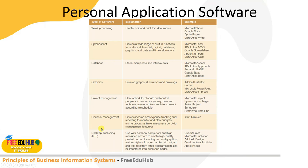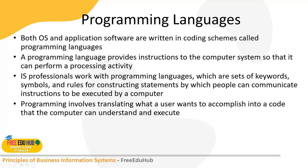Both operating system and application software are written in coding schemes called programming languages. A programming language is used to develop programs — you might develop applications in Visual Basic, ASP.NET, or PHP, depending on the organization and business motive. A programming language provides instructions to the computer system so it can perform a processing activity. Information system professionals work with programming languages that use keywords, symbols, rules, and syntax to communicate instructions to be executed by the computer.